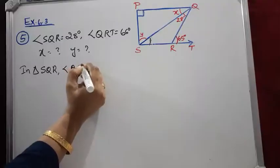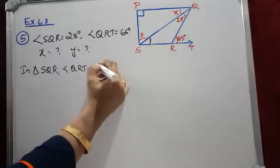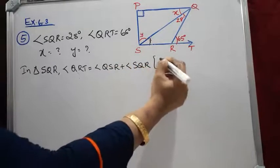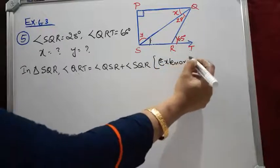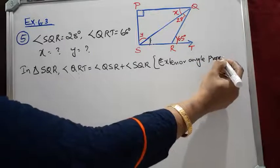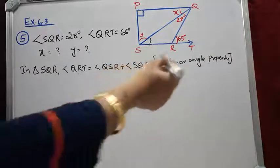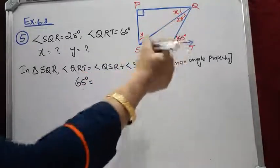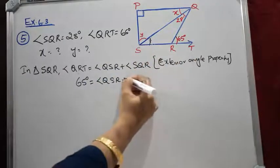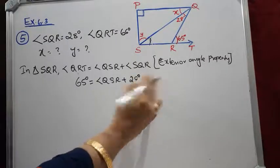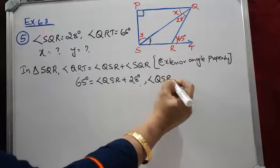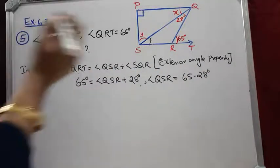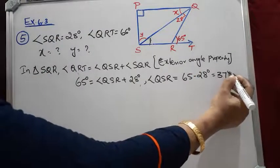In triangle SQR, by the exterior angle property: angle QRT = angle QSR + angle SQR. So 65 degrees = angle QSR + 28 degrees. Therefore, angle QSR = 65 minus 28 degrees = 37 degrees.